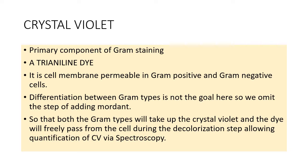Crystal violet is very important in this experiment. It is the primary component of gram staining — a trianilline dye that is cell membrane permeable in both gram positive and gram negative cells. In gram staining, a mordant, typically an iodine-iodide mixture, is added which complexes the crystal violet inside the cell cytoplasm. This complex is impermeable in gram positive cells due to the greater cell membrane thickness, which holds the complex inside.